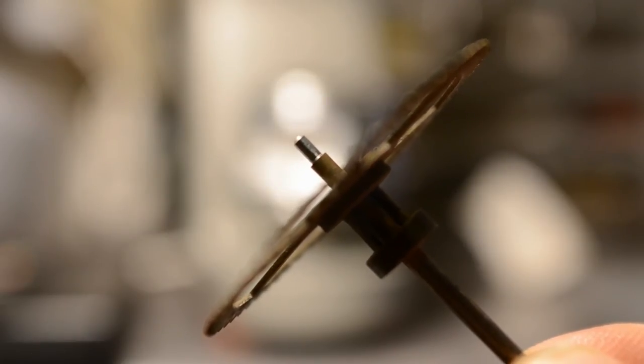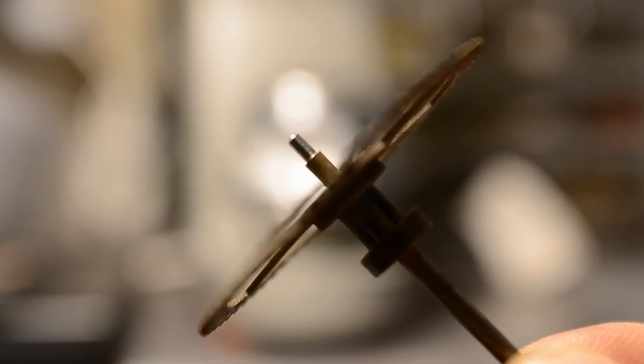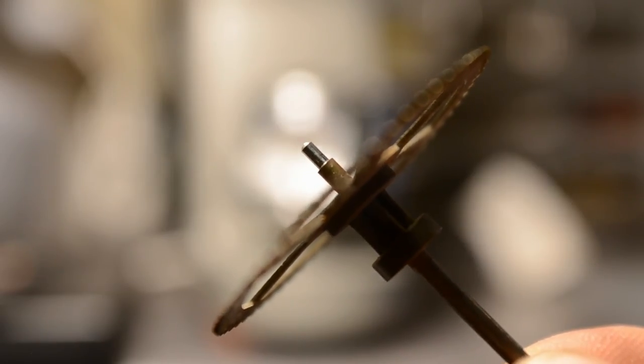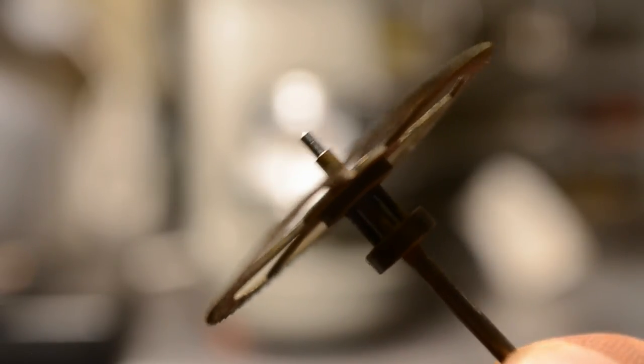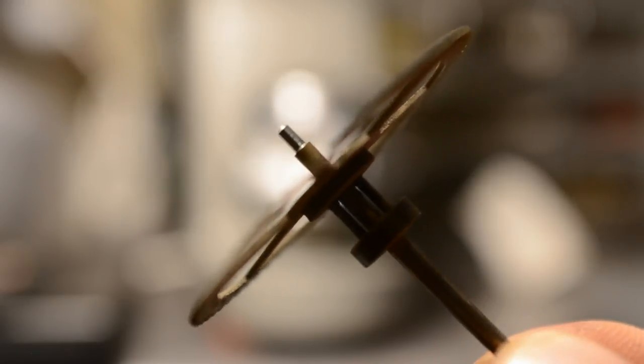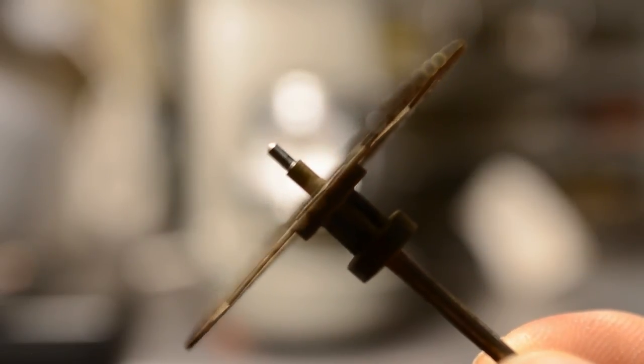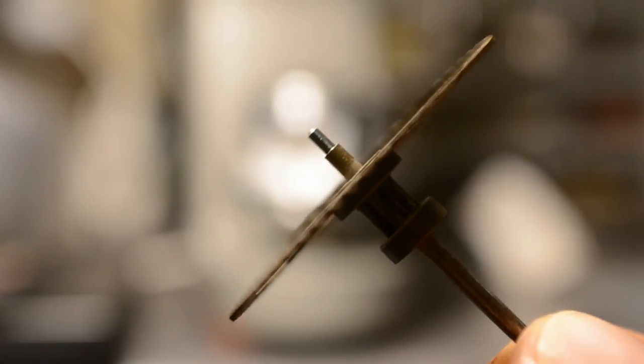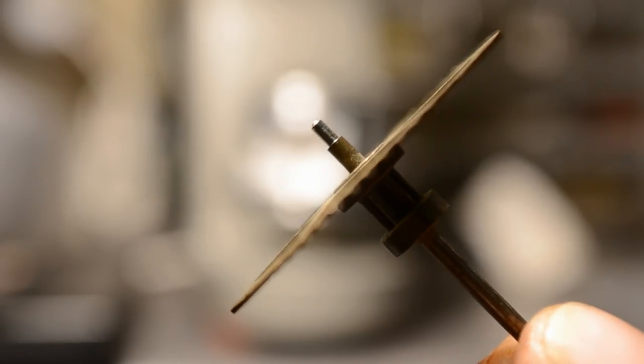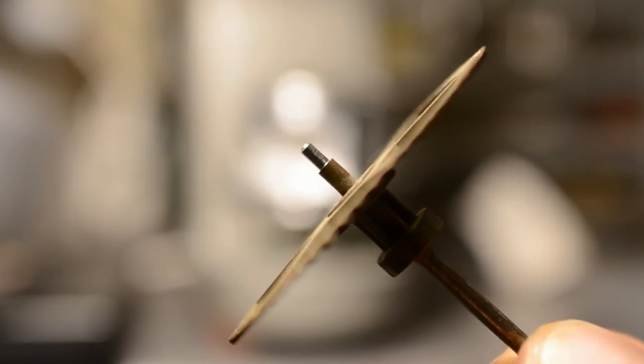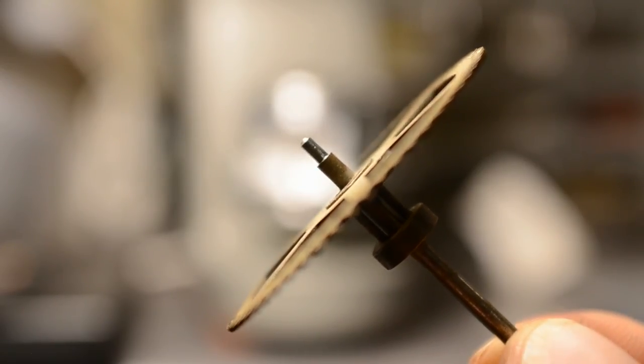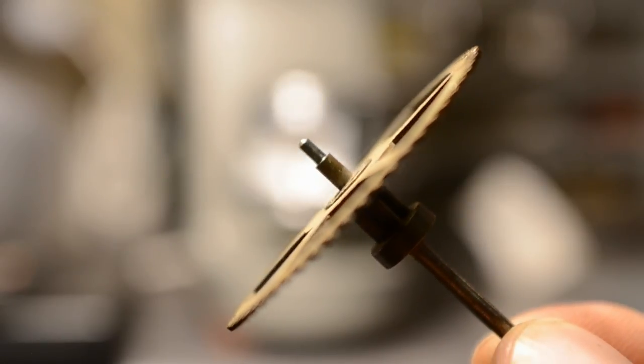Okay this is the end result after the pivot has been polished. You can see it's an absolutely perfect shape and that's just the way it came out of the factory. It's perfectly smooth, round and it's ready to be put back in the clock. And again this is just one of the many steps that we take when overhauling a clock movement.